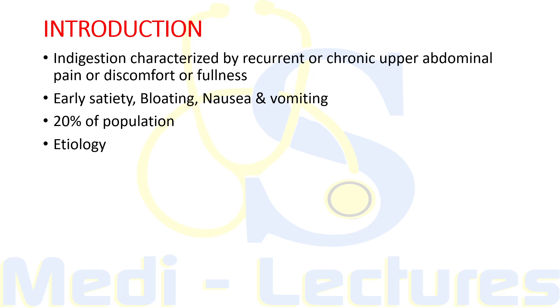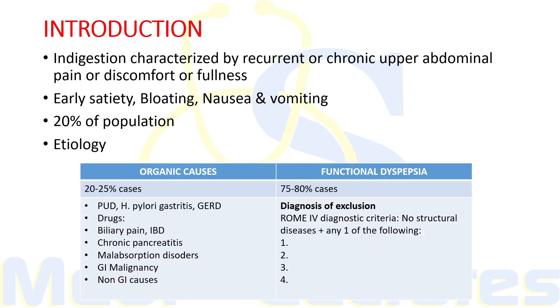When we consider the etiology, it can be divided into two types. 20 to 25 percent of cases are due to some organic cause, while in 75 to 80 percent of cases no organic cause is identifiable, and it is termed as functional dyspepsia.